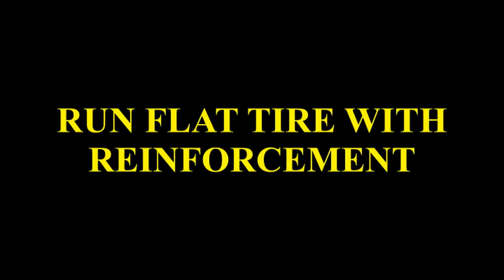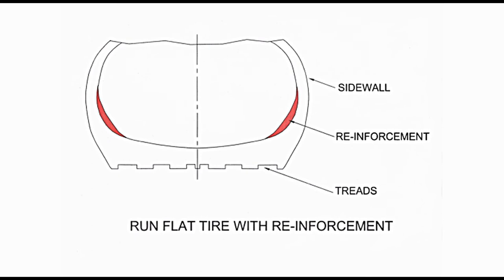Run flat tyre with reinforcement: the lower portion of the side wall is reinforced with hard rubber. Referring to diagram presenting run flat tyre with reinforcement, cut section of tyre has been shown with only the lower portion visible. Reinforcement in lower portion of side walls has been shown in red colour; material of reinforcement is hard rubber. It provides support to vehicle even when tyre has gone flat; its shape changes slightly but still supports vehicle. Tyre in flat condition can move through specified distance at specified speed as provided by the manufacturer.